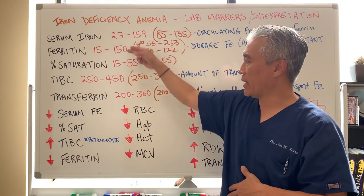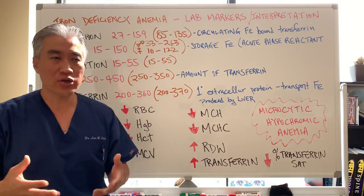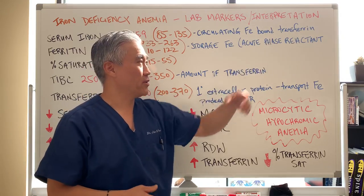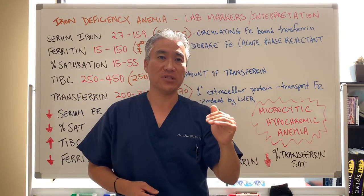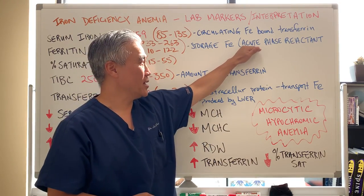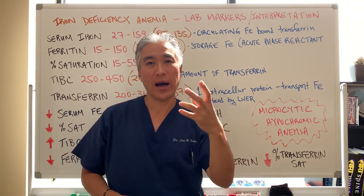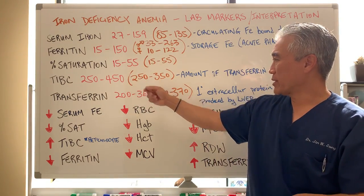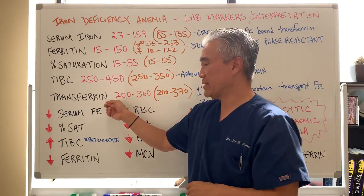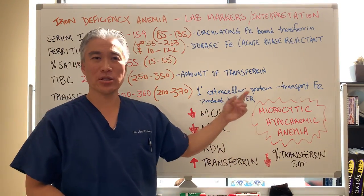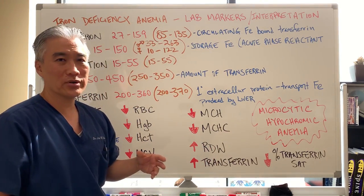We're looking at lab ranges and functional ranges, and they can be a little bit different from men to women. Serum iron is the circulating iron bound to transferrin. Ferritin is the storage iron — when ferritin is very low, it indicates iron deficiency; if it's high, it can indicate an acute phase reactant, meaning there are inflammatory processes going on. Total iron binding capacity is the amount of transferrin that binds to the iron itself. Transferrin is the primary extracellular protein that transports iron and is produced through the liver — liver function is very important to iron levels.